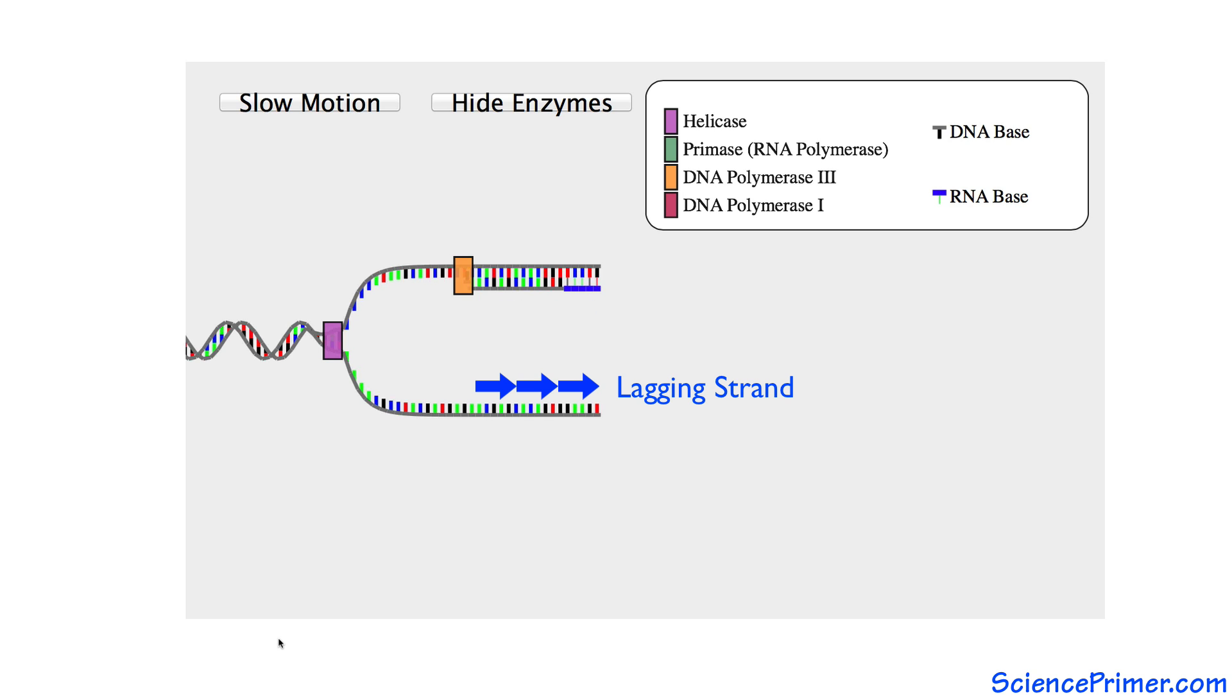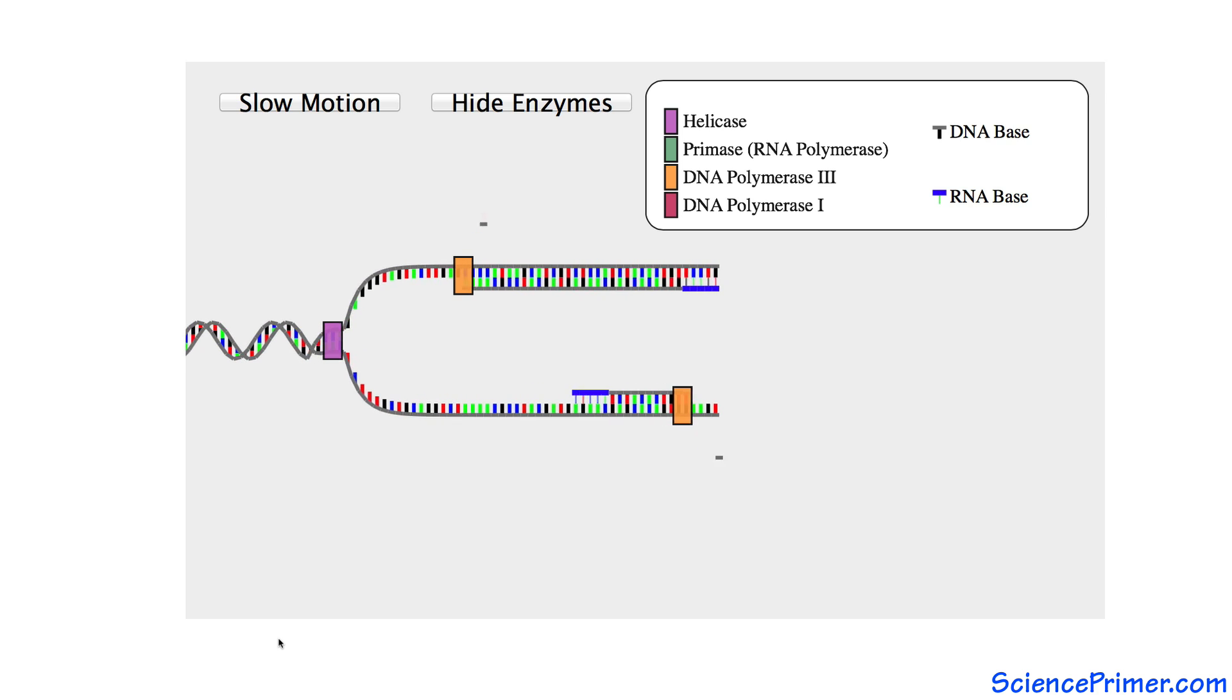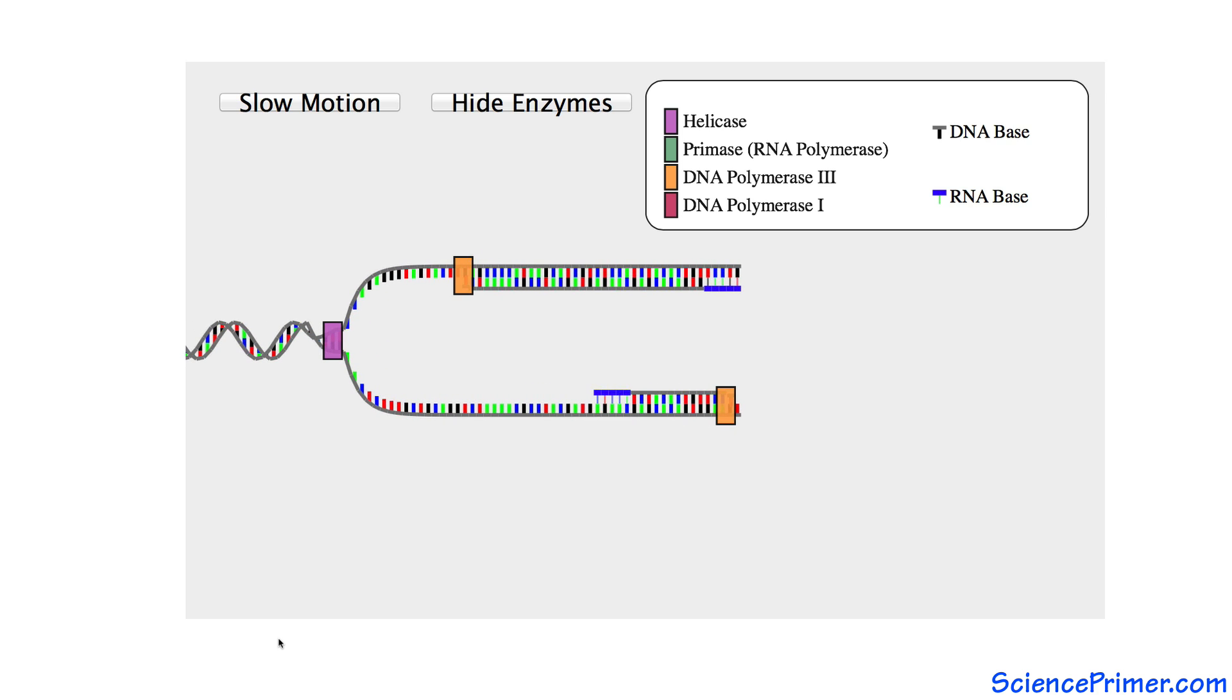On both the leading and lagging strands, DNA replication starts with primase adding a short 3-10 base RNA primer to the template strand. Once the primer is added, DNA polymerase III elongates the strand by adding DNA nucleotides to the 3' hydroxyl end of the growing polymer.